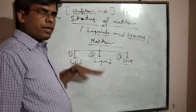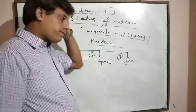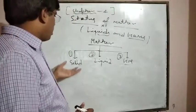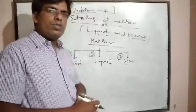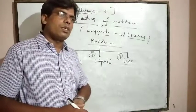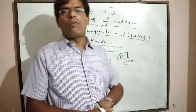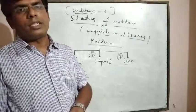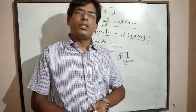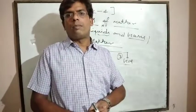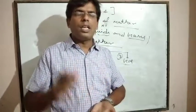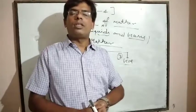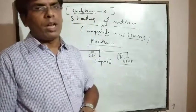How can we distinguish between solid, liquid, and gas? Solids are those substances in which intermolecular attractive force is very high. Solids have a compact structure and molecules are arranged in a regular way. Solid substances have high density and high melting and boiling points.